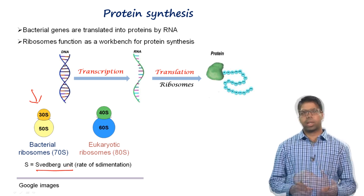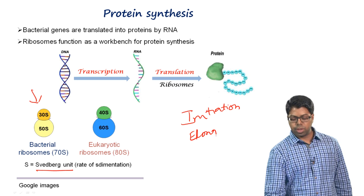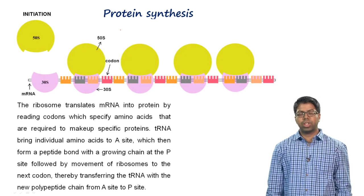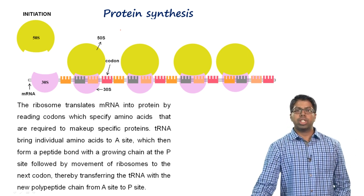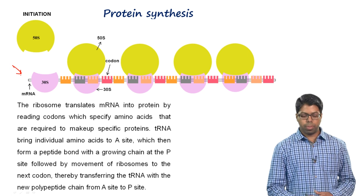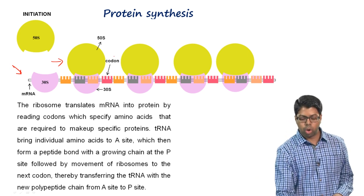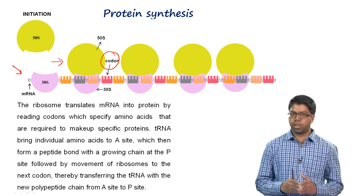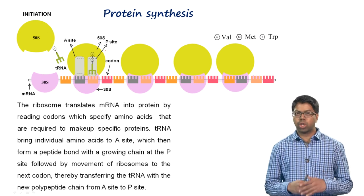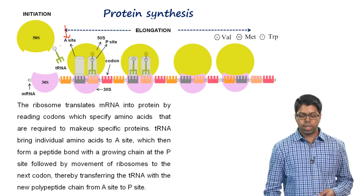Protein synthesis in bacteria has three stages: initiation, elongation, and termination. Initiation begins with binding of formyl-methionine tRNA to the start codon on mRNA bound to the 30S subunit, followed by recruitment of the 50S subunit forming the 70S complex. The ribosome reads nucleotide triplets called codons specifying amino acids. Transfer RNA brings individual amino acids to the aminoacyl site (A site), which then forms a peptide bond with the growing polypeptide chain at the peptidyl site (P site).